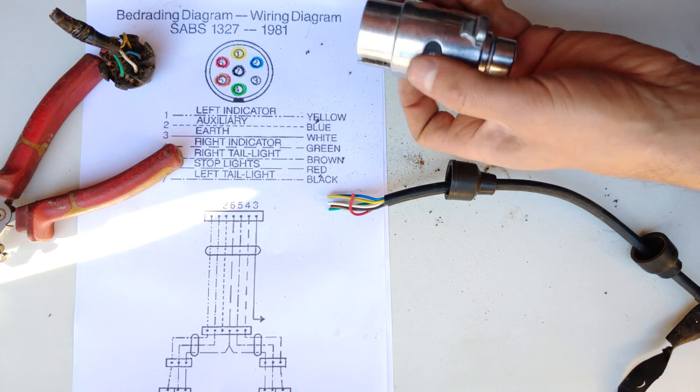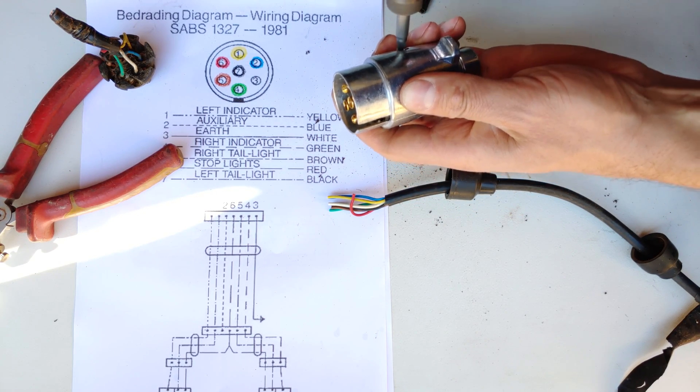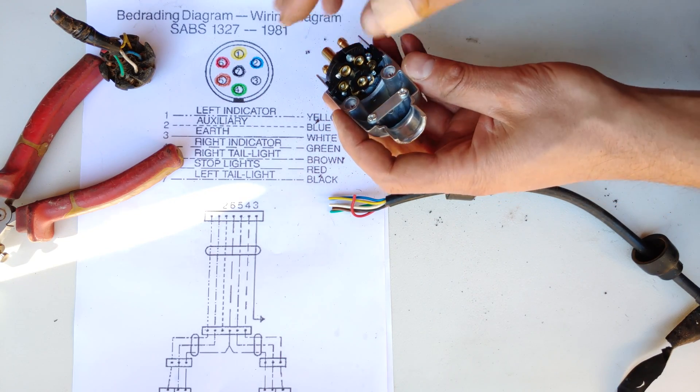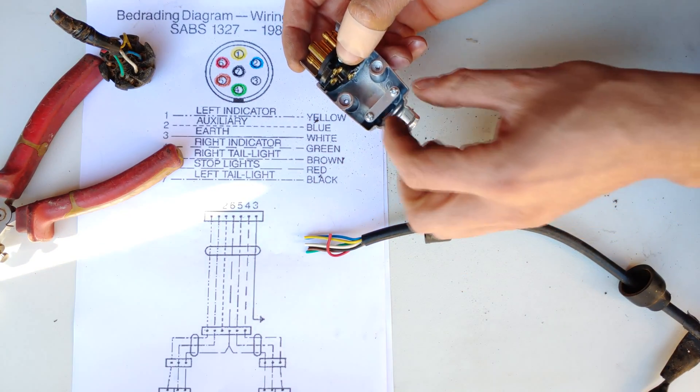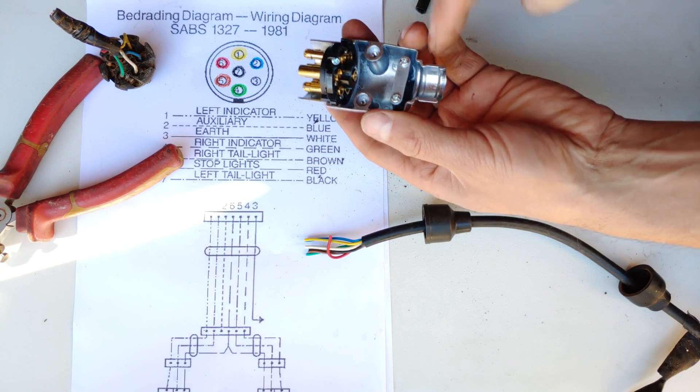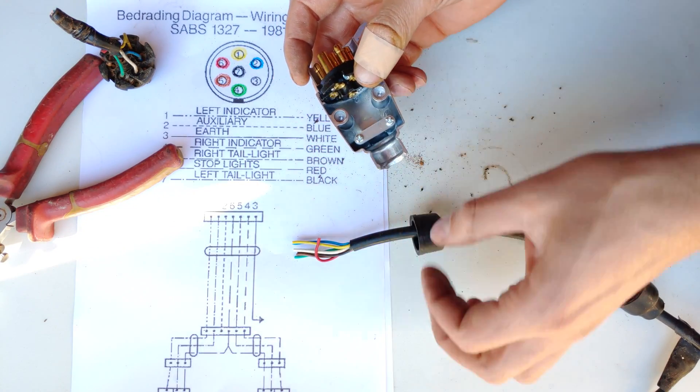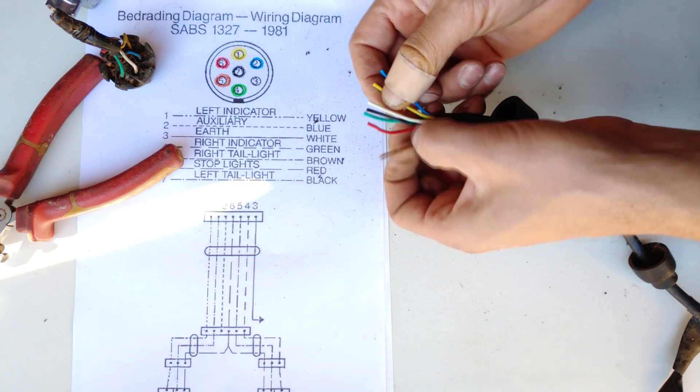I'm going to open this one up. As you can see there are two screws here, so I don't have to thread this in first because I will be able to open both of these. Some trailer plugs do not have two screws, so you would have to thread it in first.